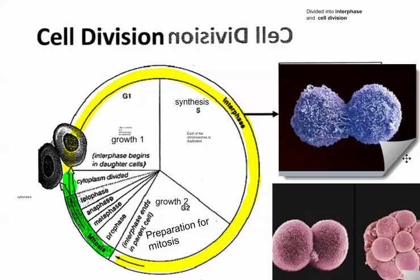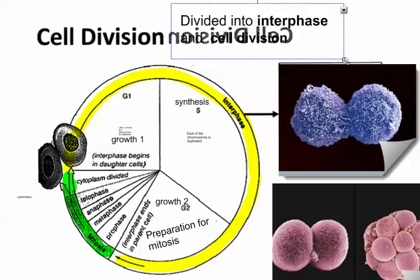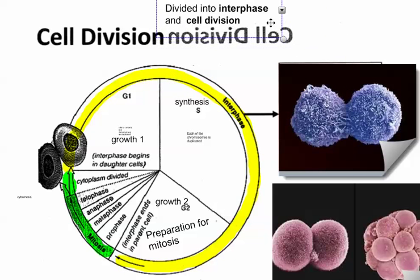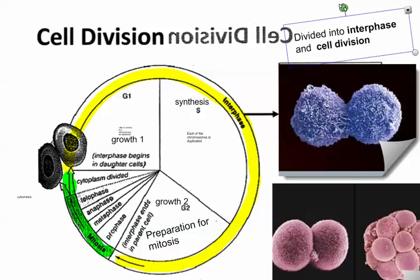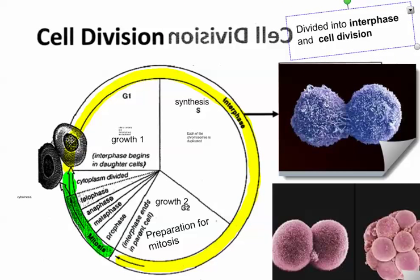When you look at a diagram like this — if you type 'cell cycle' into Google and look at the images — you'll get tons of graphs that all look pretty much the same, maybe showing things in different proportions. In general, the basic cell cycle consists of two larger phases, each of which can be split into smaller ones. We divide the cell cycle into interphase and mitosis, the actual dividing phase.